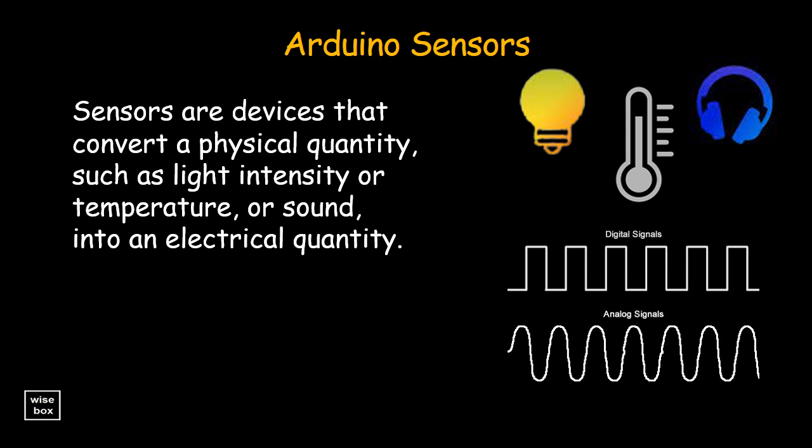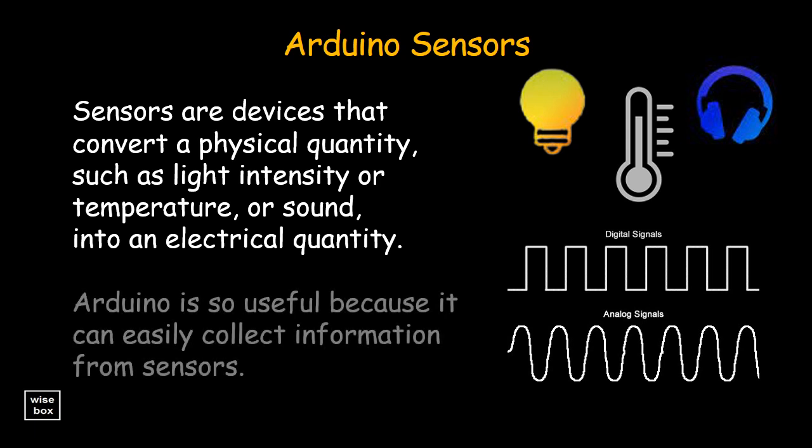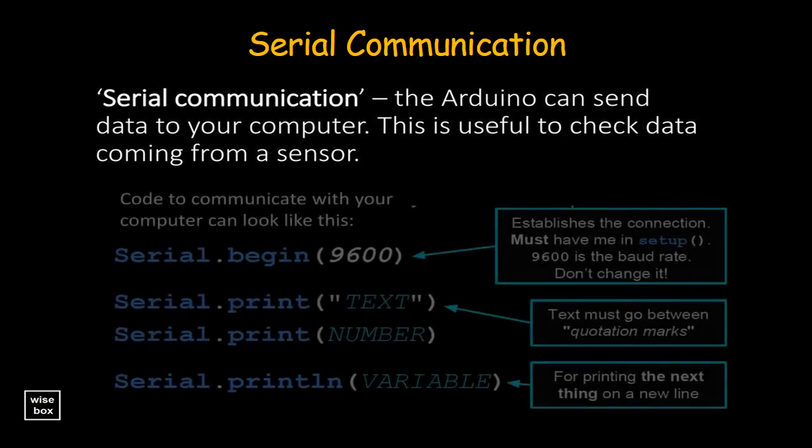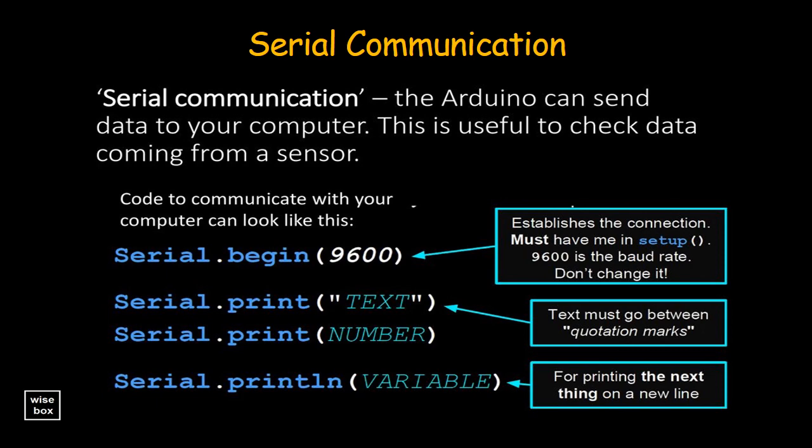One reason that an Arduino is so useful is that it can easily collect information from sensors. The Arduino can send data to your computer through serial communication. This is a very useful tool in order to check data coming from a sensor.